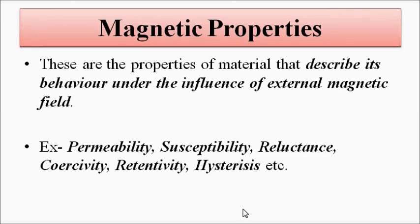Magnetic properties describe the material's behavior when it is placed under the influence of an external magnetic field. The various parameters associated with the magnetic characteristics of the material are: permeability, susceptibility, reluctance, coercivity, retentivity, and hysteresis.